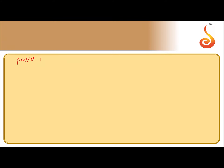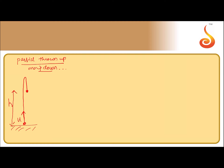Let us consider one more example. A particle is thrown up but is now moving downward after reaching the highest position. It is thrown up with velocity u, has gone to the highest point, and is now returning. At this point under consideration from the ground, h is the displacement and velocity is in the downward direction. Is u positive? Yes, because it is in the upward direction. v is negative because it is in the downward direction. a, which equals g, is always in the downward direction, therefore negative. h — the particle is above the initial level — therefore we take it with a positive sign.